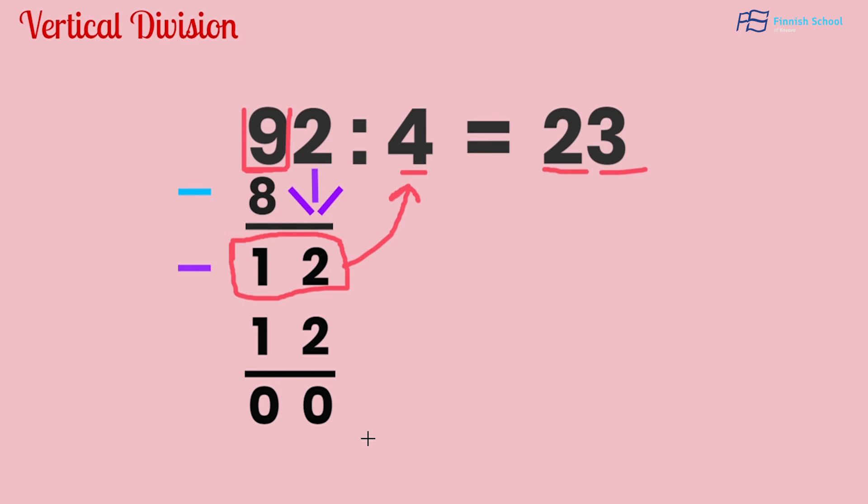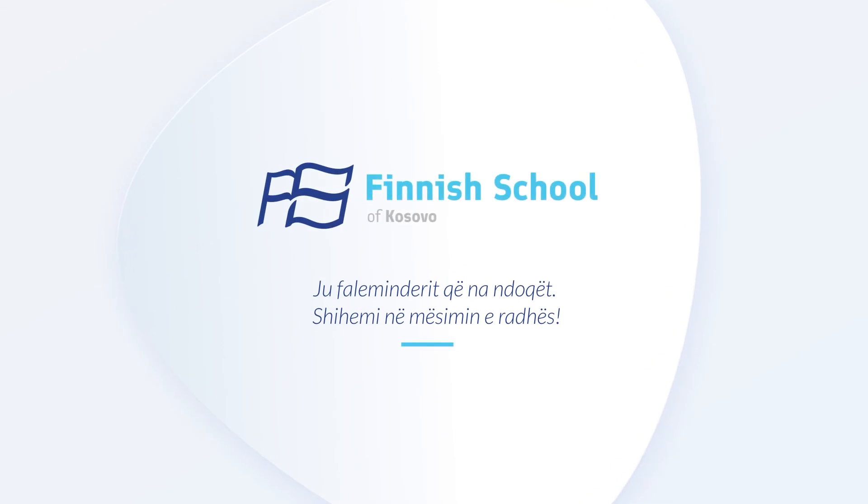So if we want to divide 92 candies into 4 equal parts, we have to divide those candies into 23 ones in 4 different parts.